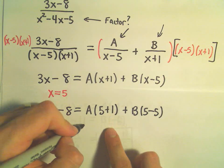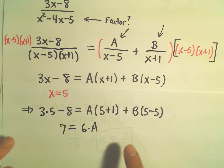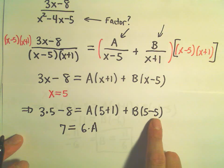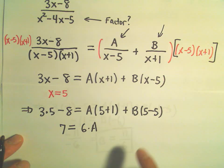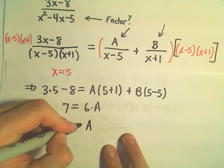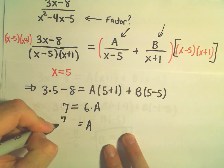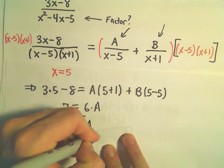Notice the B, the B term is gone. We've got B times 0. And then we can just divide both sides by 6. And now we've got our A value.